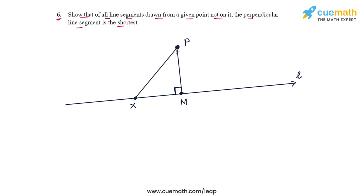And we have to show that the perpendicular drawn from P onto the line, which is PM, is the shortest possible line segment that you can draw from P to the line.